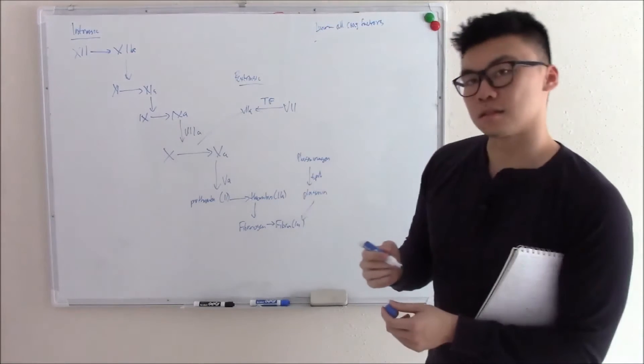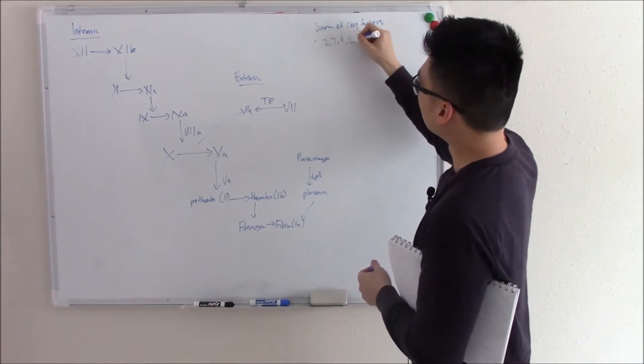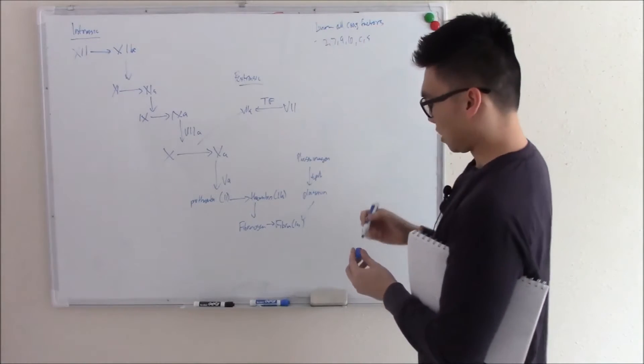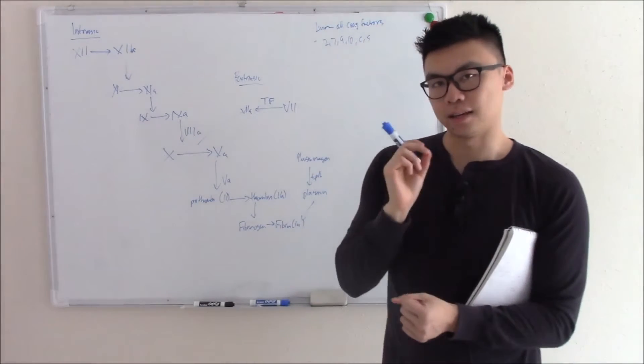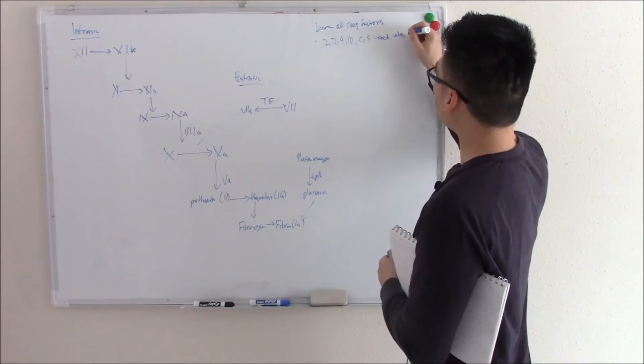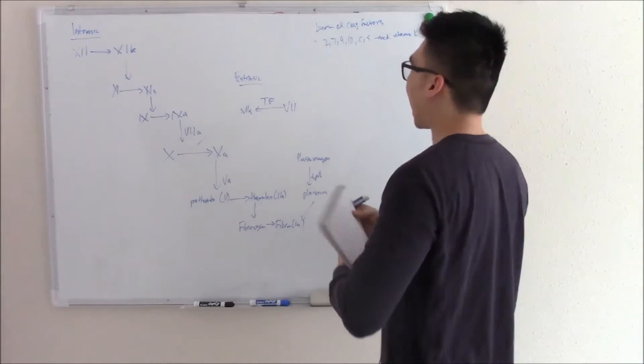Now certain factors like 2, 7, 9, 10, and then anticoag factors like C and S need vitamin K in particular. So these need vitamin K and vitamin K activates these.